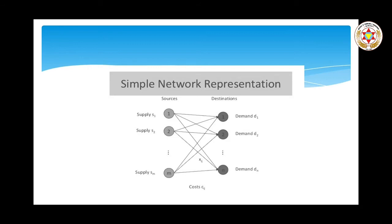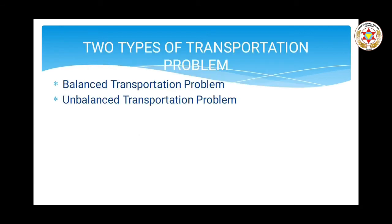There are two types of transportation problems: balanced and unbalanced. A balanced transportation problem is one in which the total supply available at all origins exactly satisfies the total demand required at all destinations. An unbalanced transportation problem is one where the total availability at the origins is different from the total requirement at the destinations.